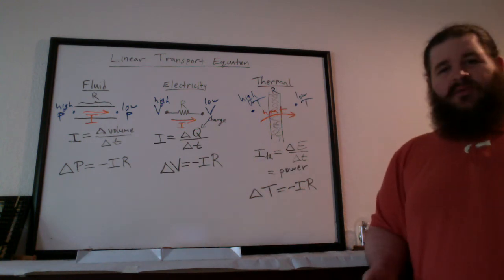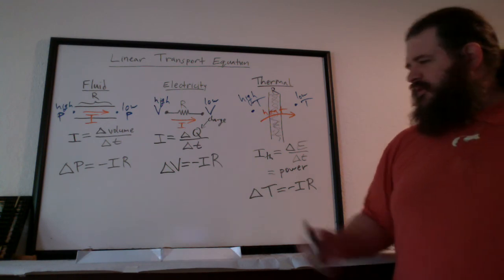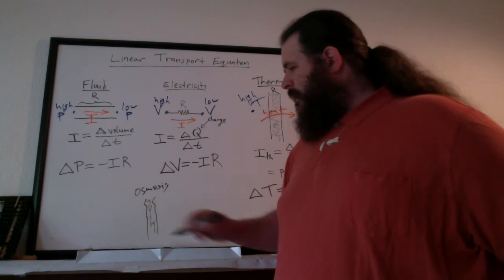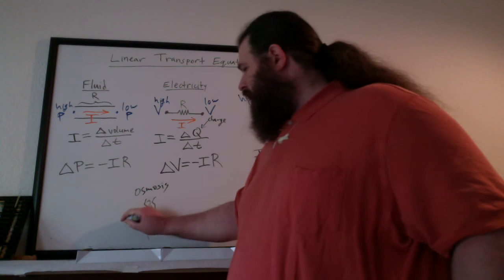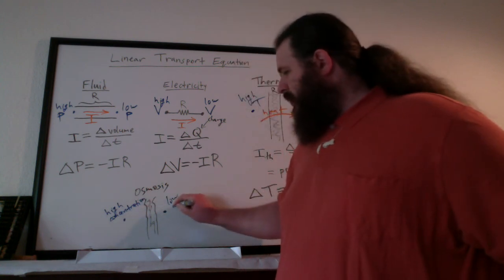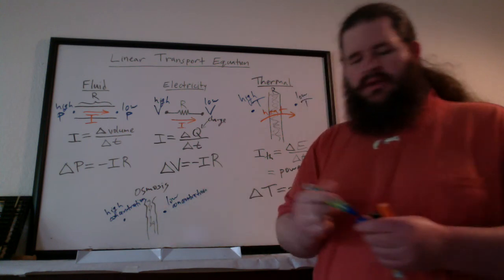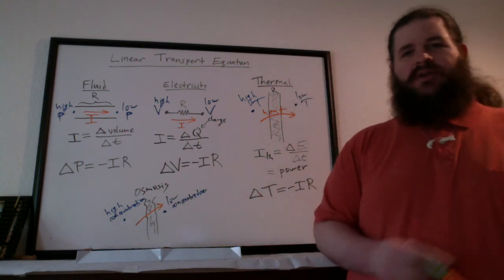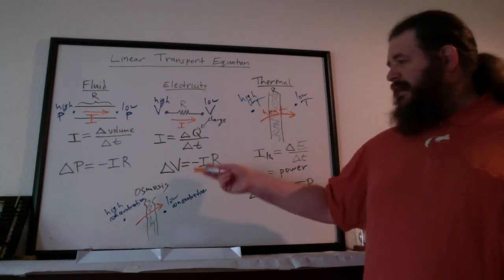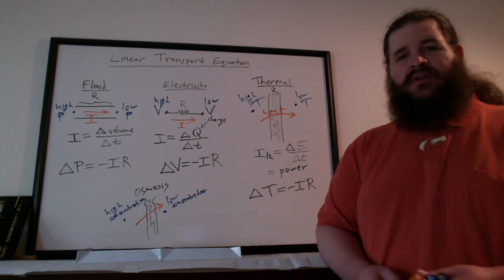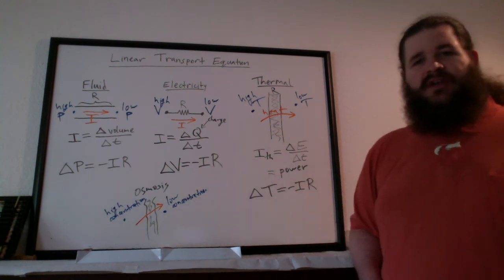All three of these situations, and more, follow this exact same structure. Another example that often shows up is osmosis — osmotic flow. If you've got some cell membrane, what causes osmotic flow is a difference in concentration. If you've got high concentration of some molecule on one side and low concentration on the other, you get osmotic flow — molecules jumping across the cell membrane from high concentration to low concentration — governed by the same structure of equation: delta concentration equals negative osmotic flow times resistance of the cell membrane.